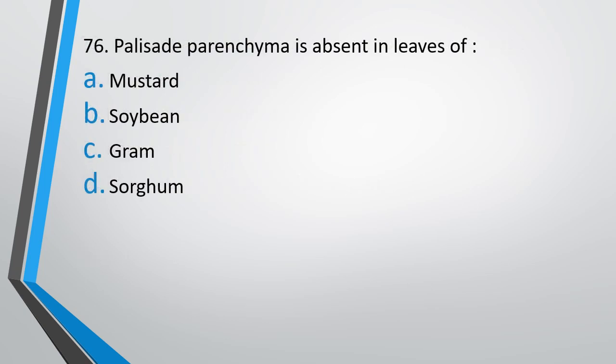Question number 76. Palisade parenchyma is absent in the leaves of? Option A: Mustard. Option B: Soya bean. Option C: Gram. Option D: Sorghum. The correct answer is Option D — palisade parenchyma is absent in the leaves of Sorghum.